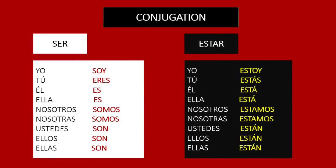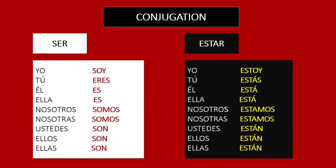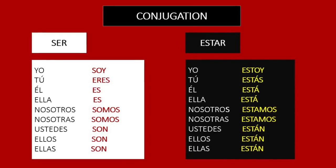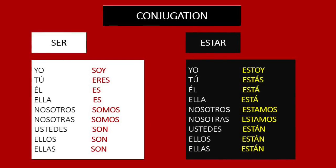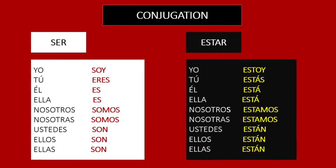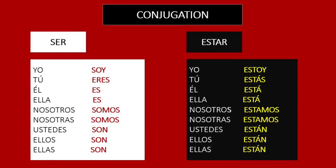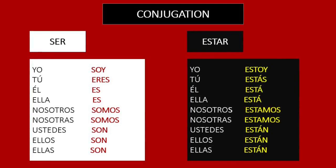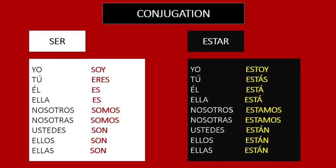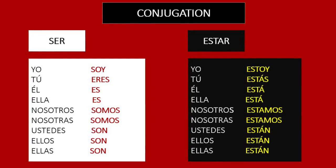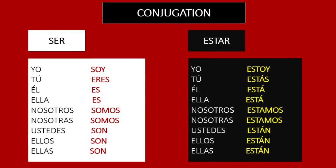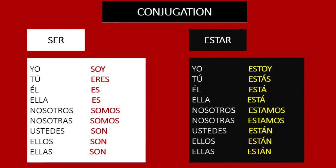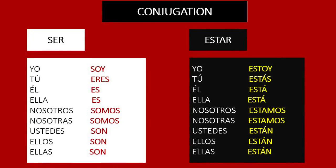La conjugación del verbo ser. Yo soy. Tú eres. Él es. Ella es. Nosotros somos. Nosotras somos. Ustedes están. Ellos están. Ellas están.